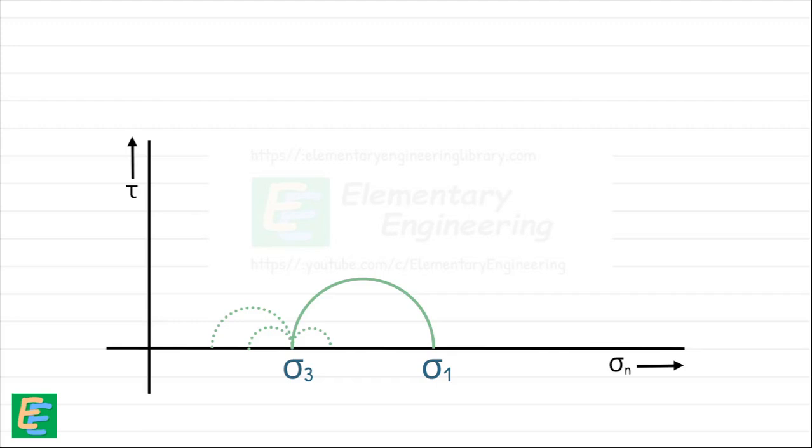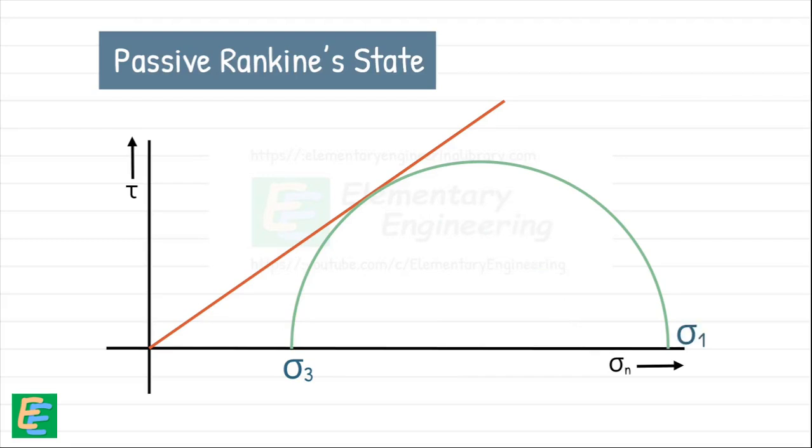With this increasing horizontal stress, the Mohr circle grows. And if the compression keeps going to the point of failure, the Mohr circle touches the failure envelope, marking the moment when the soil reaches its passive Rankine state.